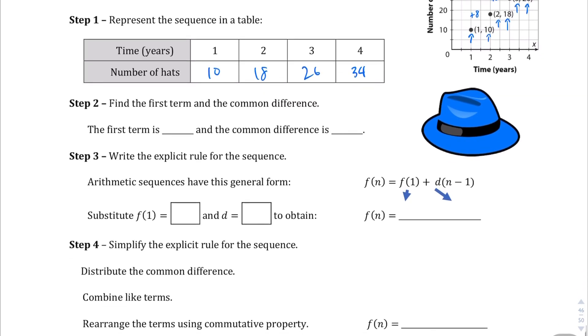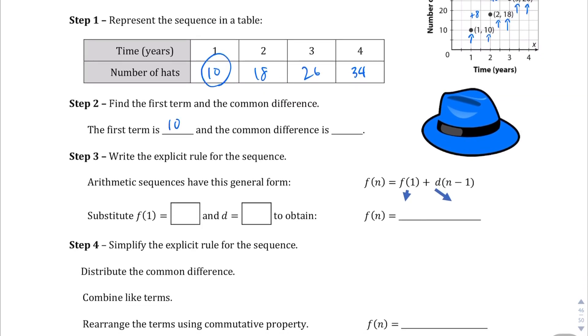Let's go ahead and find the first term and the common difference. The first term, we can find it right here, which is 10. The common difference, each time, is going to be plus 8, or positive 8 in this case.